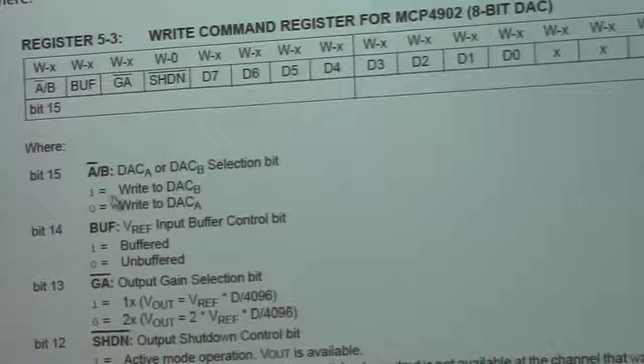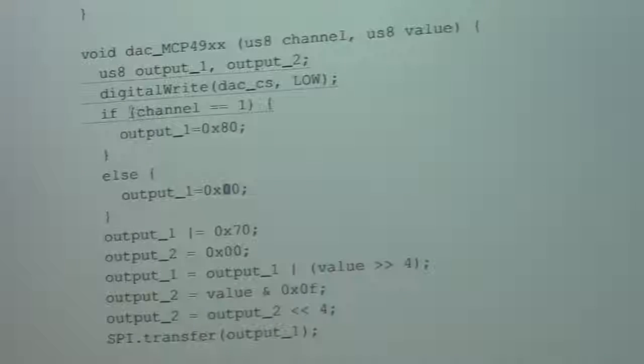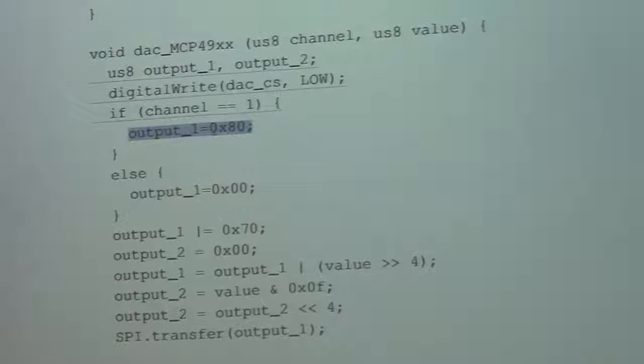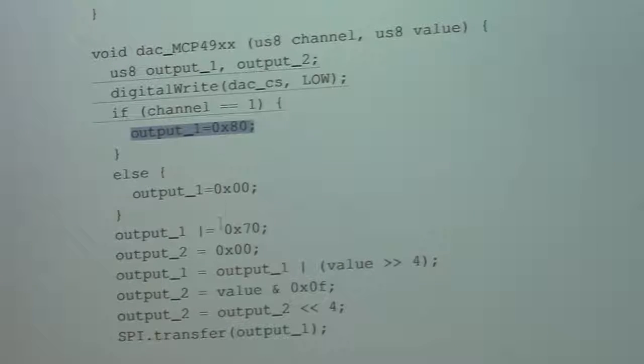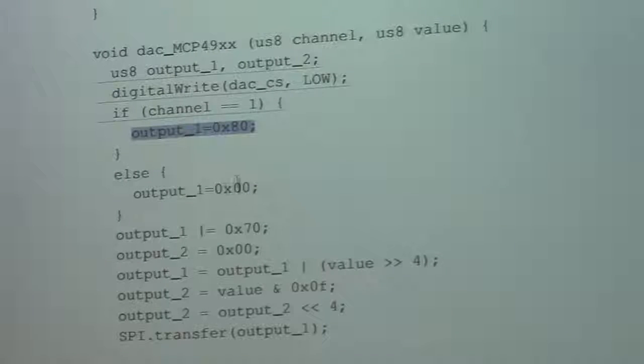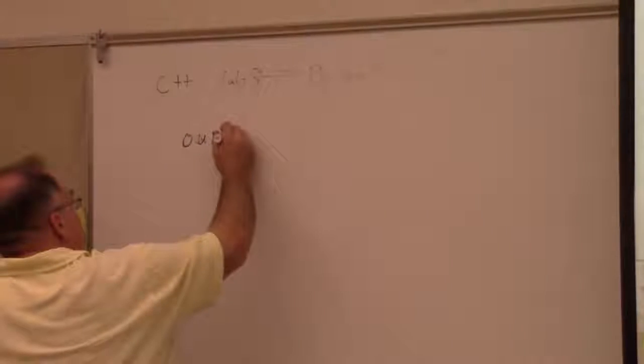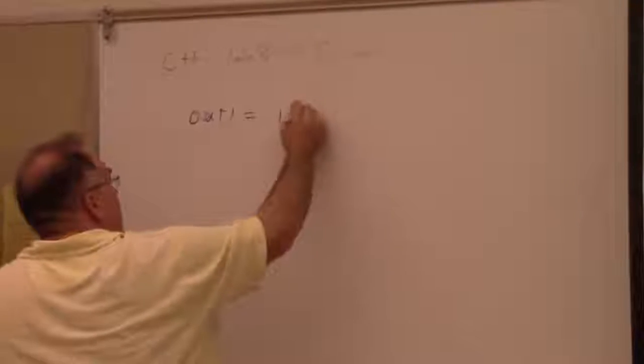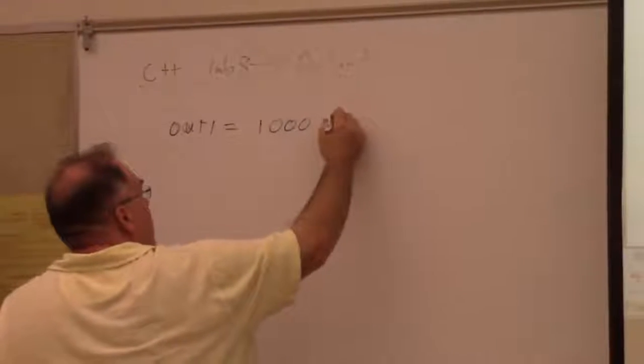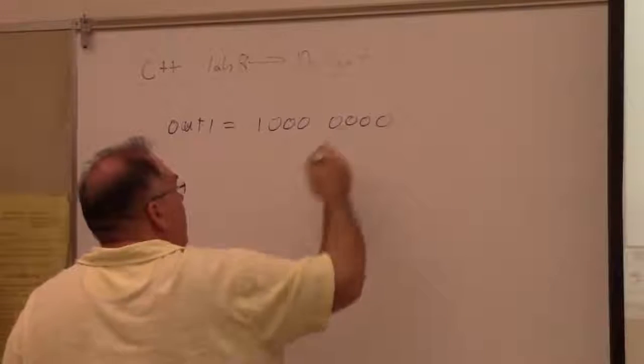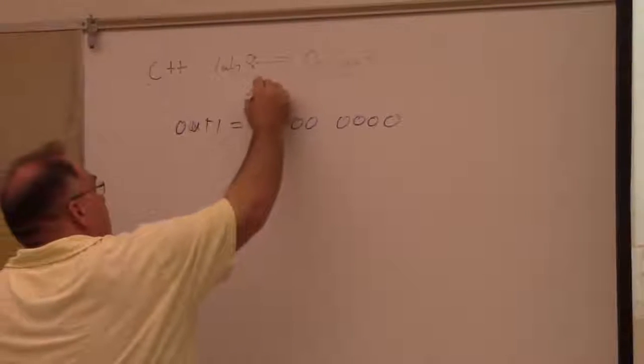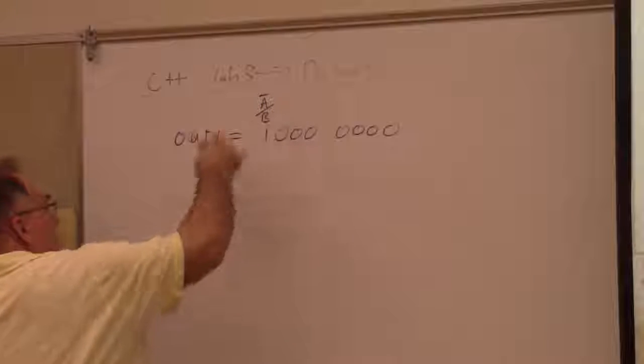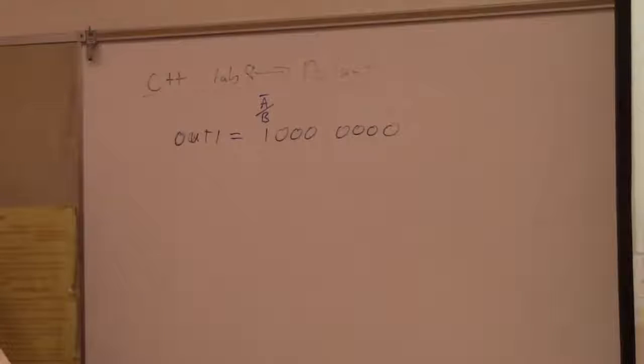So zero is DACA and a one is DACB. So for channel one, we set that most significant bit to one, and if it's channel zero, we set it to zero. We said it started out as eight zero, which is one, zero, zero, zero, zero, zero, zero, zero, right? And this is our AB. Right? And when, so we selected channel B because it's one.